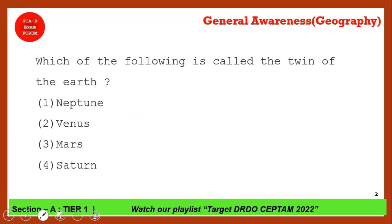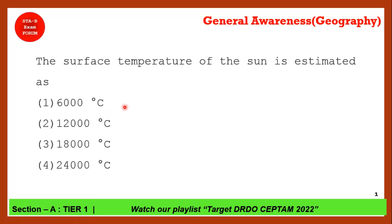Which of the following is called the twin of the Earth? This has come in the DRDO September 9 exam. The correct answer is Venus — option 2. Venus is called the sister planet, veiled planet, brightest planet, and hottest planet. Venus has a lot of nicknames, which we covered in the previous chapter.